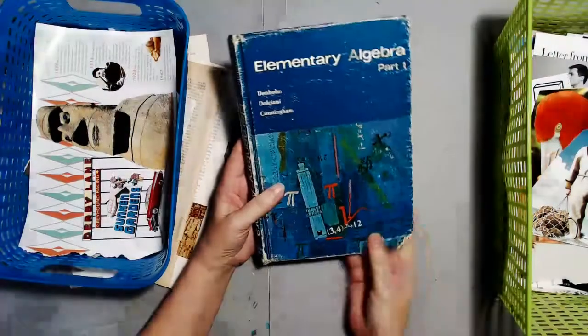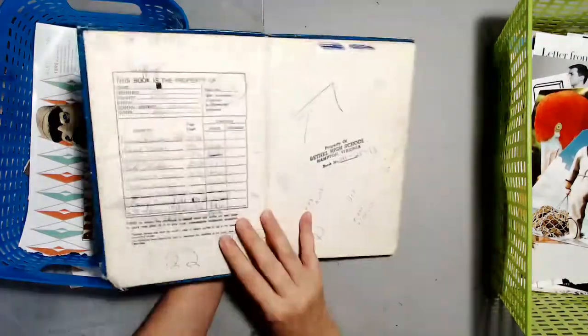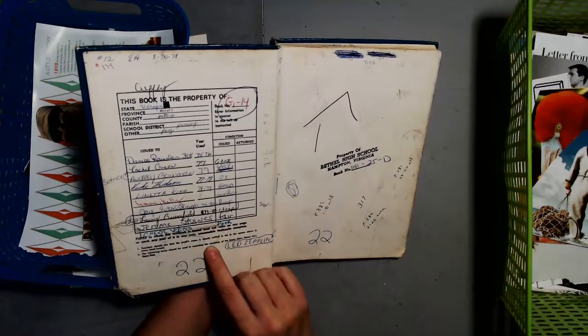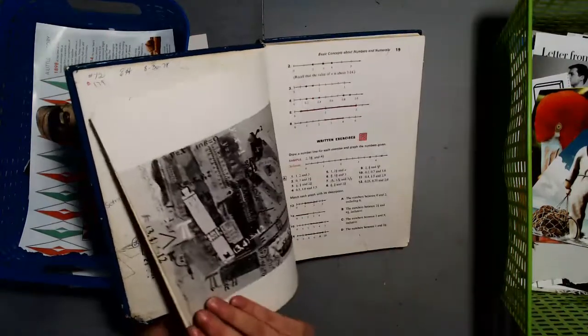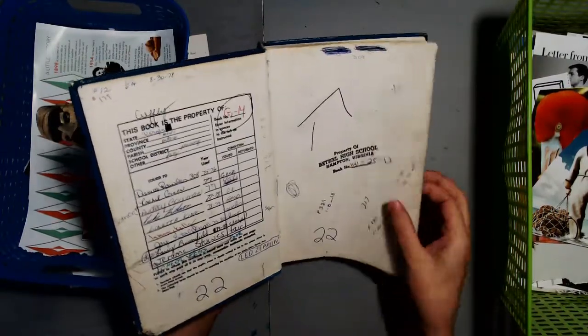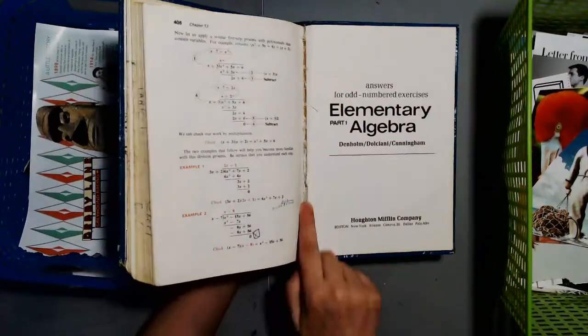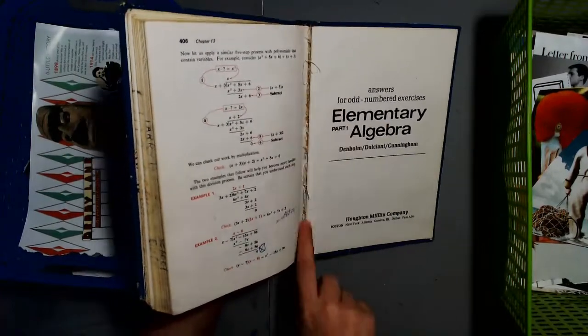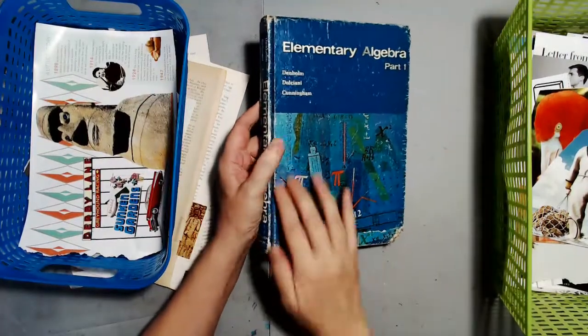It is an elementary algebra, probably a high school book, that was used between 75 and 80 and it's seen better days. I had been taking pages out of this so there's quite a few pages missing in great big huge chunks. The book really is in bad shape.